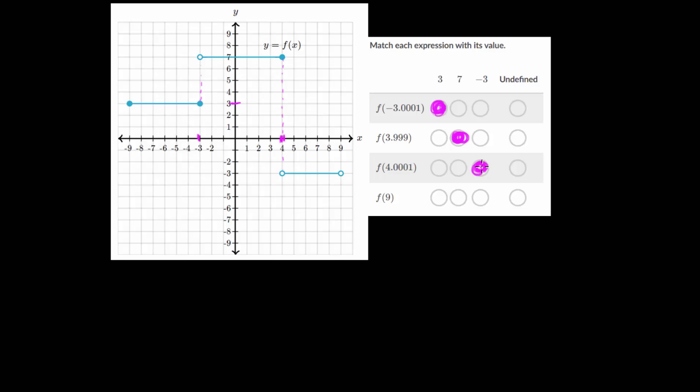And lastly, we have f of 9. Now this one's an interesting one, because we only have one marking for 9 and it's an empty circle. So this interval with y value of negative 3 goes from 4, not including 4, and ends at 9, but again not including 9. So 9 actually doesn't have any point on the graph. If it did, it would have some closed-end circle. But since it doesn't have that, there is no defined y value for 9. There are defined y values very close to 9, but not 9 exactly. So this one is actually undefined here.